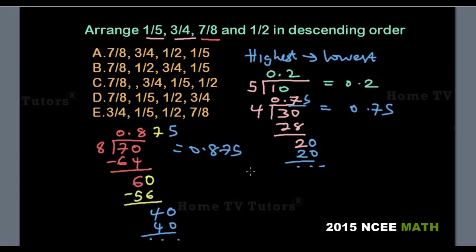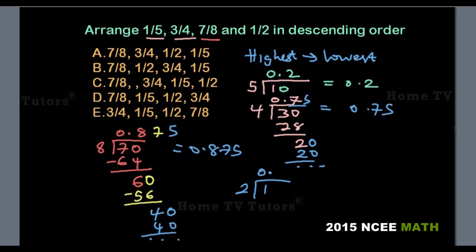The last fraction is 1 over 2. We divide 1 by 2. 2 into 1 is not possible, so we add 0 and a decimal point. 2 into 10 is 5. 5 times 2 is 10. So 1 over 2 equals 0.5.